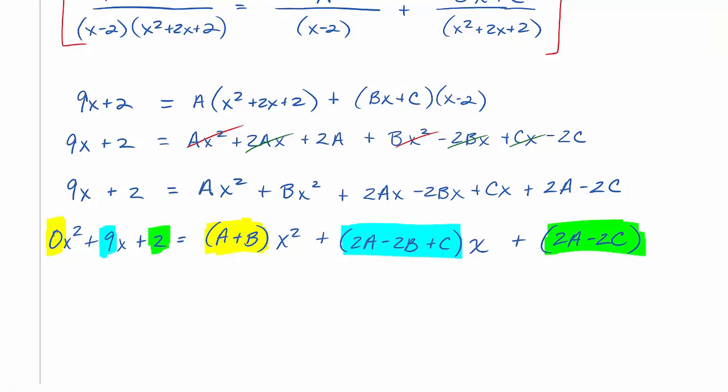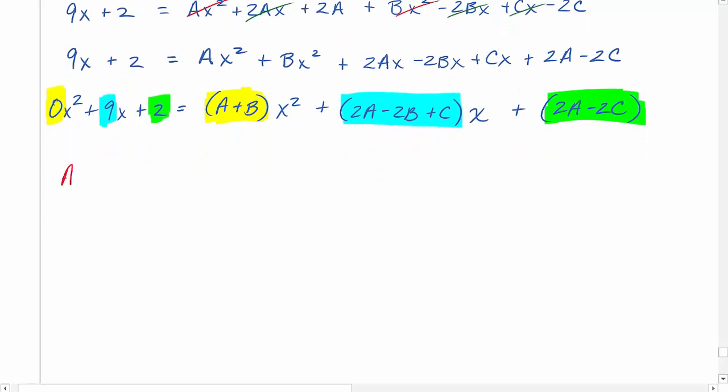Let's write up our system and solve. a plus b equals 0, 2a minus 2b plus c is equal to 9, and 2a minus 2c is equal to 2. And now we solve. I think the system can be the hardest part of this whole thing, because sometimes the systems can be intense to solve.